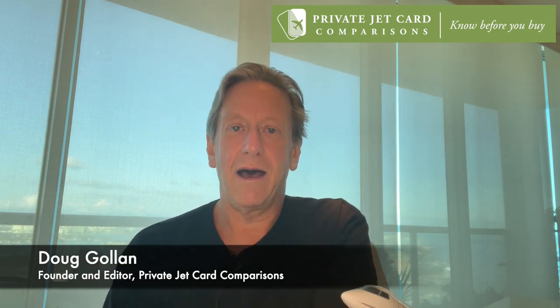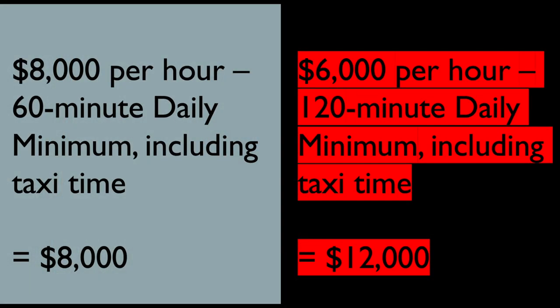Consider this comparison: you see an $8,000-per-hour rate and a $6,000-per-hour rate. If that $6,000 rate comes with a two-hour daily minimum, you're going to be charged $12,000 for the flight. If the $8,000 rate has a 60-minute minimum and taxi time is included in that minimum, you might only pay $8,000 for the exact same 30-minute flight. So that lower $6,000 hourly rate could actually cost you significantly more — in this case $12,000 versus $8,000.